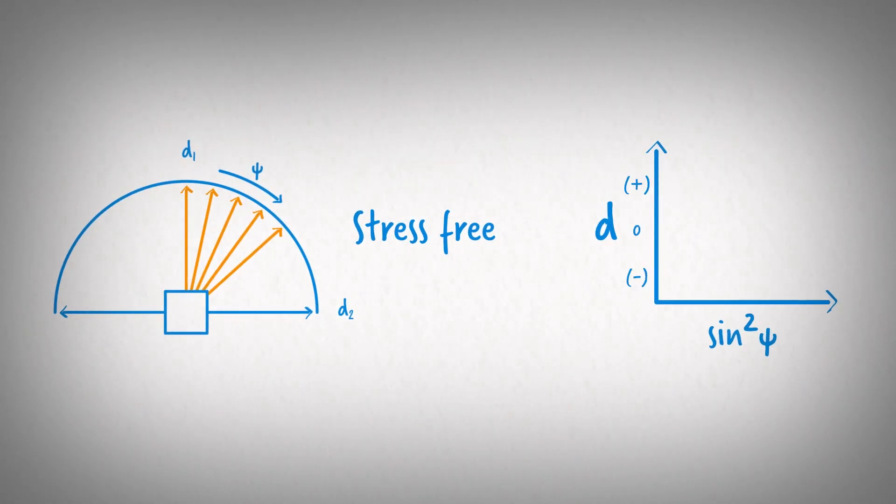In a stress-free material, the atomic spacing, D, will be the same in all directions. The sine-squared psi plot shows a horizontal line at zero.